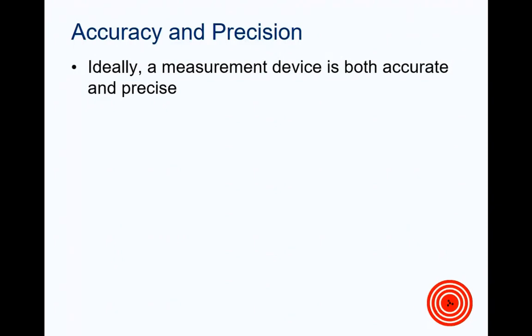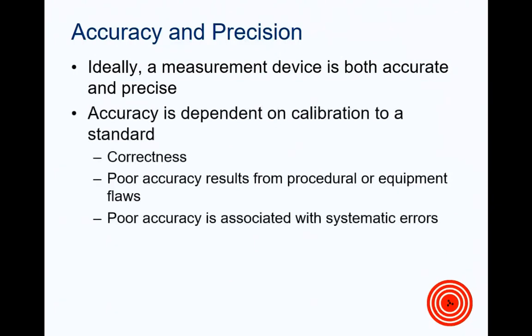Ideally, any measurement device that we pick up and use would both be accurate and precise. Accuracy is dependent on calibration to some sort of standard. And, when we have poor accuracy, it's often because of some procedural or equipment flaw. Poor accuracy is often associated with systematic errors. So, if you think back to our example, the person who is standing too far away from the starting gun, while timing track and field events, will not be accurate. They will consistently time these track and field events as being too long.